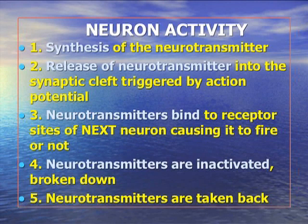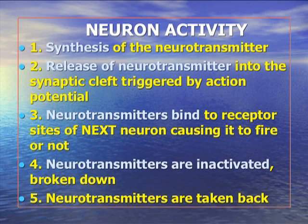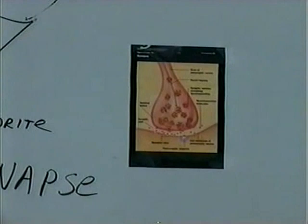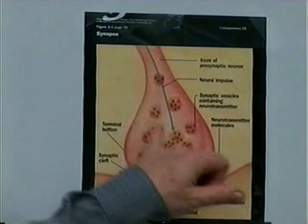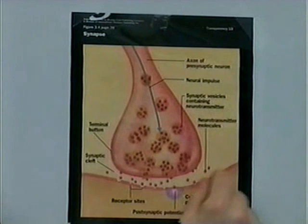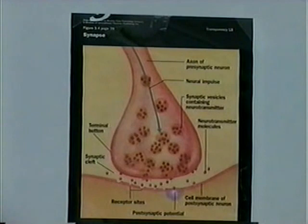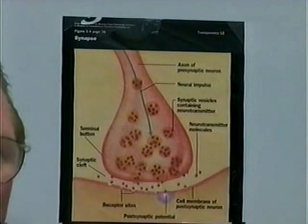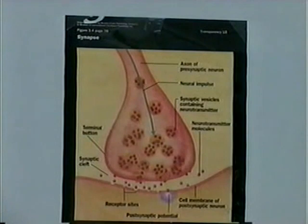These neurotransmitter molecules have a physical structure, and there are receptors with a parallel physical structure on the other side. For the next neuron to fire, these neurotransmitters need to fit right in like a key into a lock into that next neuron. They either cause the next neuron to fire or cause it to slow down. In fact, most of the internal pharmaceuticals our body produces actually inhibit our behavior.